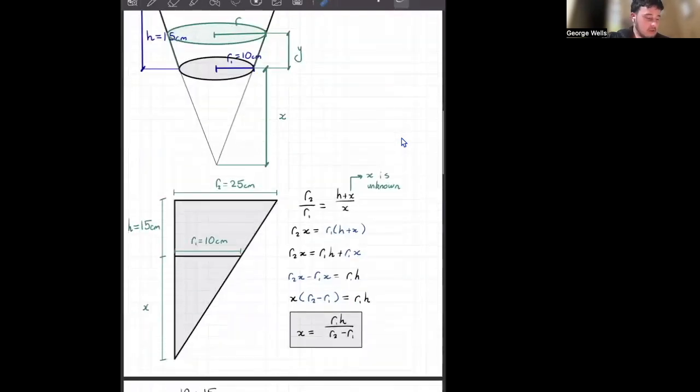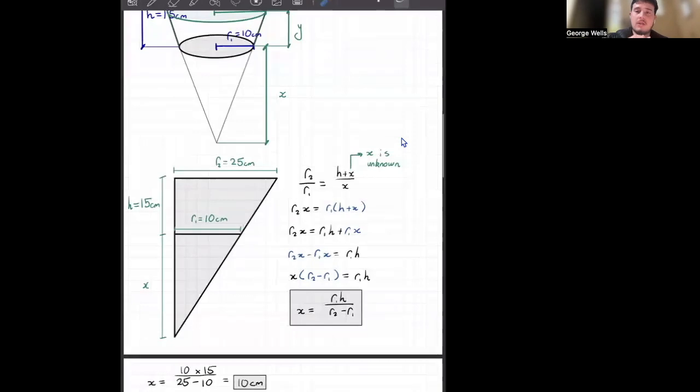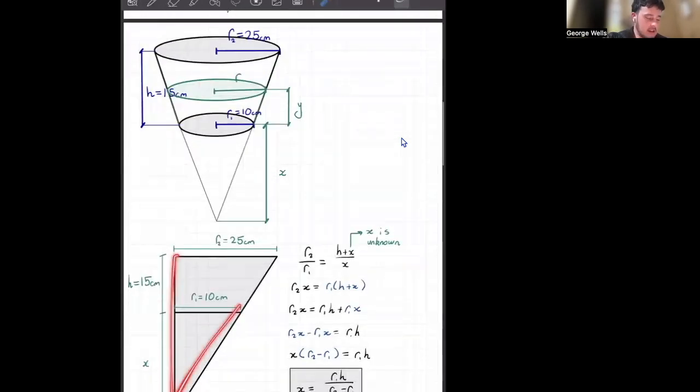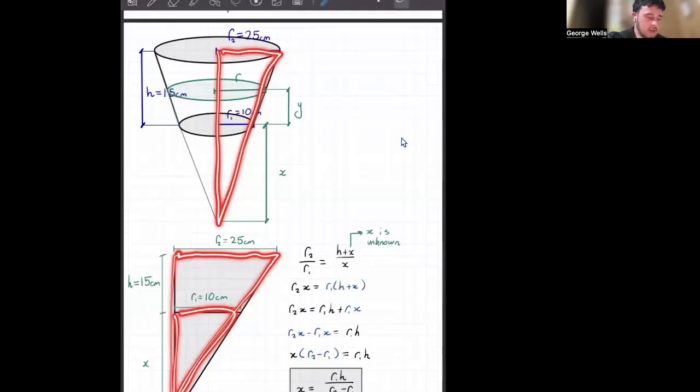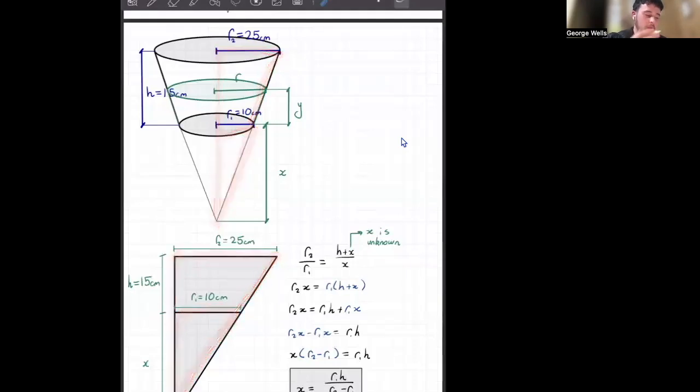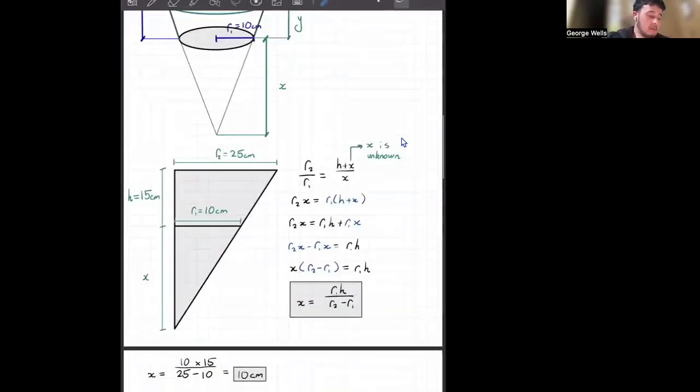So we're going to now try solve for x. And we can use similar triangles over here. So what this is down here, a bit of a cross-section through our cone. So this triangle here is essentially this bit here. And this triangle is this bit of our cone, or frustum.